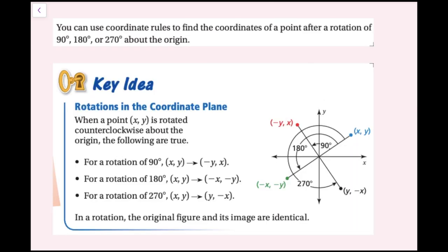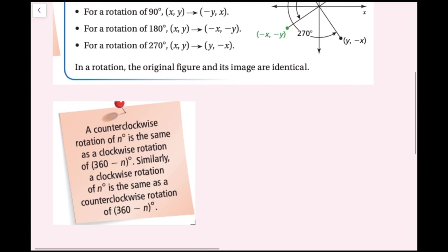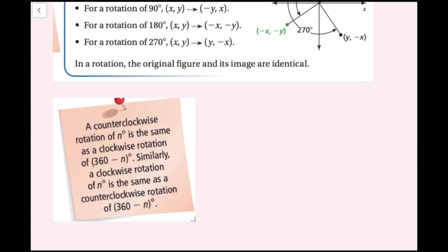You can use coordinate rules to find the coordinates of a point after a rotation of 90, 180, or 270 degrees about the origin. When a point (x, y) is rotated counterclockwise about the origin: 90° gives (−y, x); 180° gives (−x, −y); 270° gives (y, −x). In a rotation, the original figure and its image are identical. A counterclockwise rotation of n degrees is the same as a clockwise rotation of 360 − n degrees.